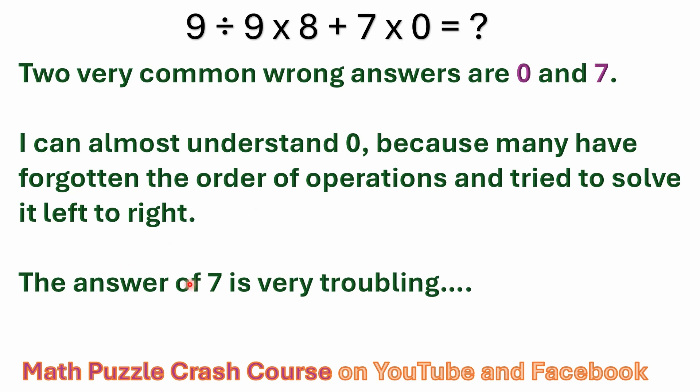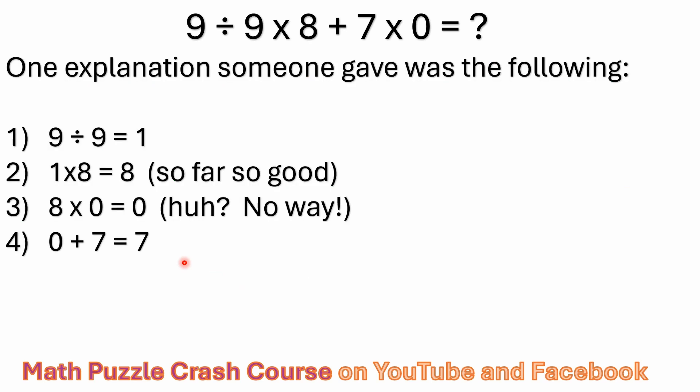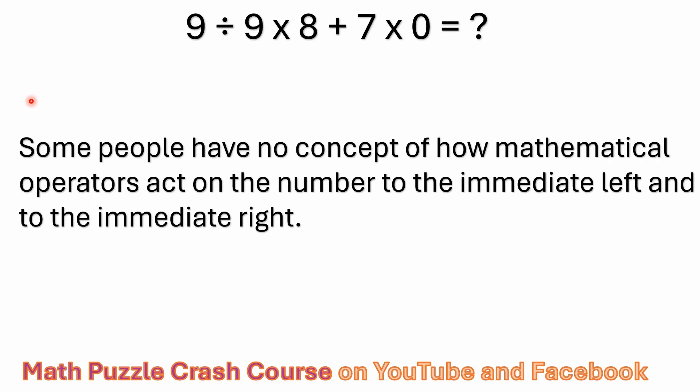Now the answer of seven is really troubling to me. It really is. I couldn't wrap my head around this at first because I've seen a lot of people answering this problem with seven online. And one of the explanations that somebody gave me and I tried my best to follow what they were doing here. They started out nine divided by nine is one, which is good. One times eight is eight. So far, so good. But then the next thing they did on this third step was say eight times zero is zero. No, there's no way. And then they're saying zero plus seven equals seven. Yeah. This really stumped me. And I've seen people give this answer and they'll even say, well, PEMDAS tells me to do that.